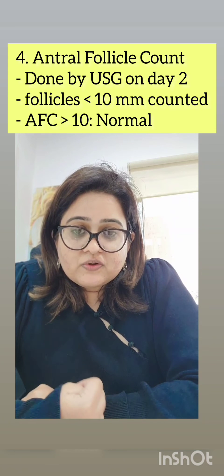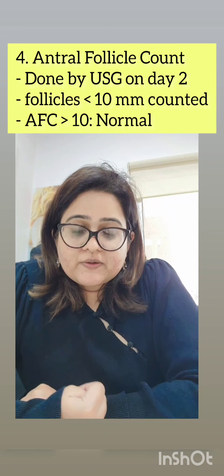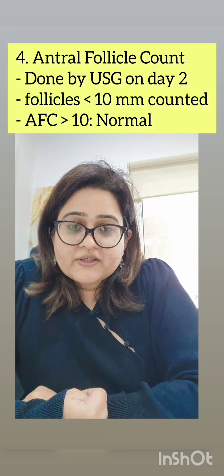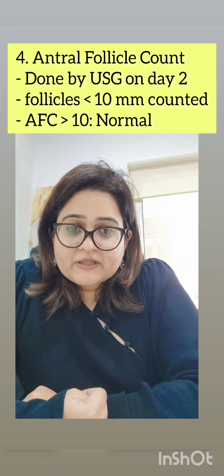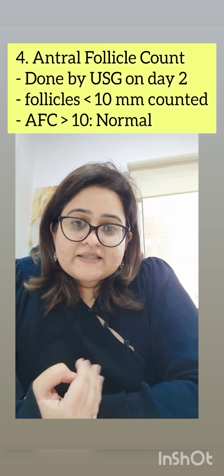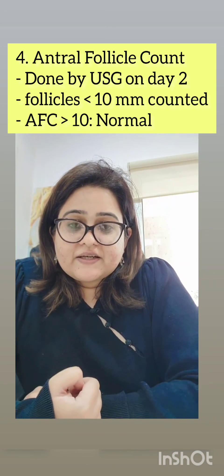The fourth test is antral follicle count (AFC), which is done on ultrasound. On day 2 of the cycle, we count the number of follicles less than 10 millimeters. An AFC less than 10 is an indicator of poor ovarian reserve.